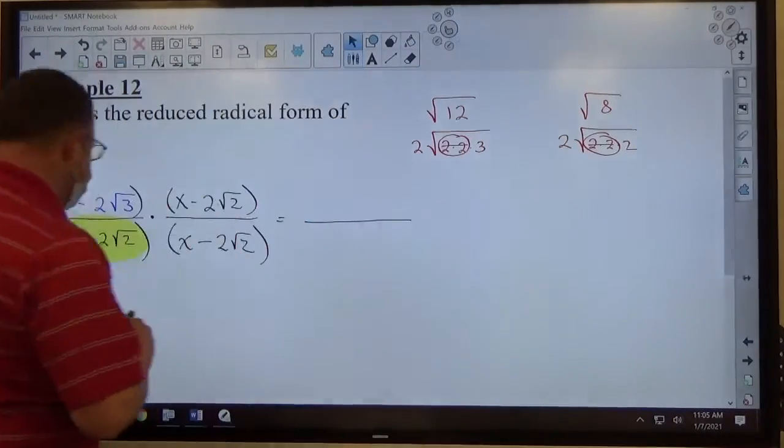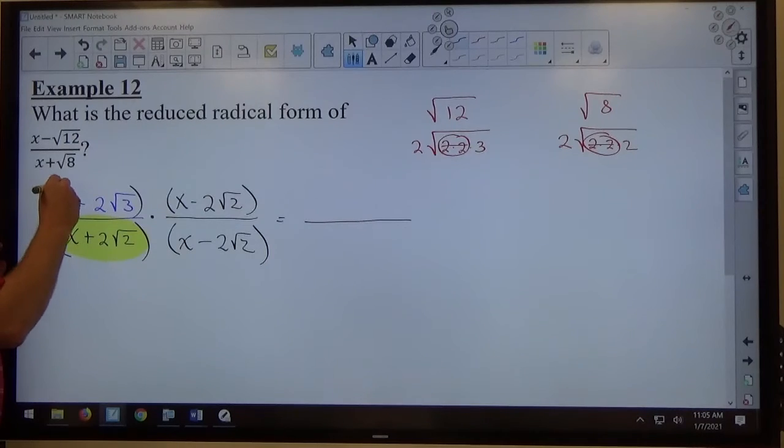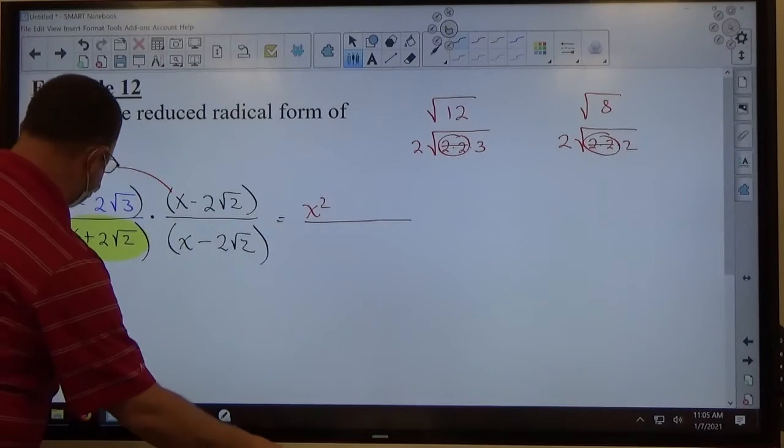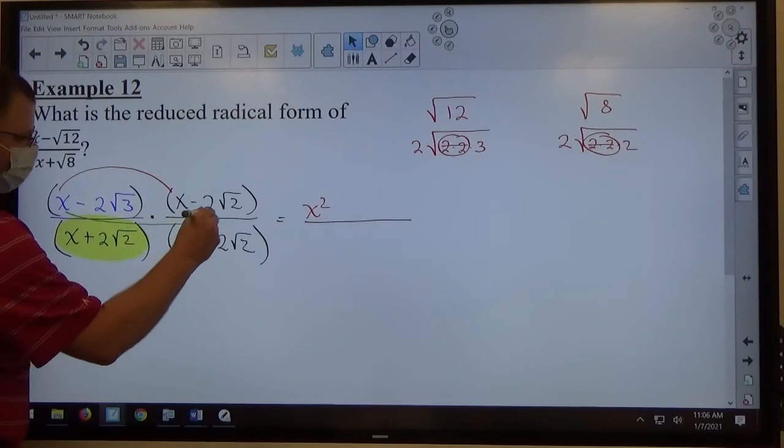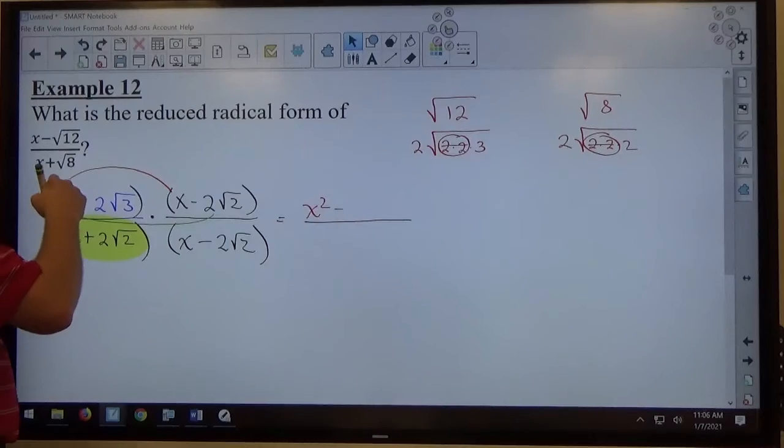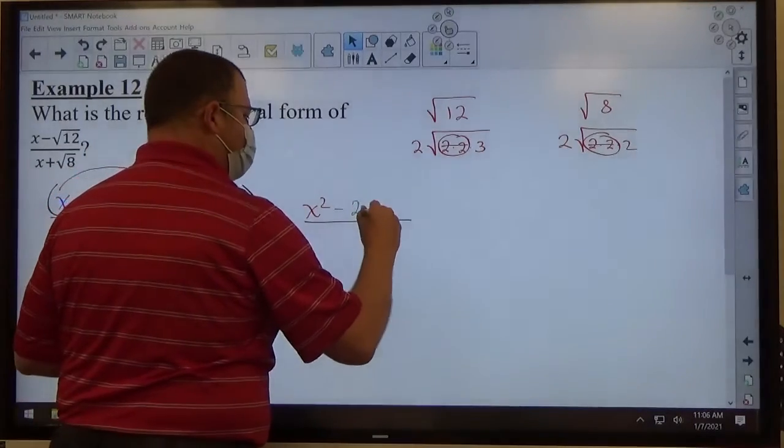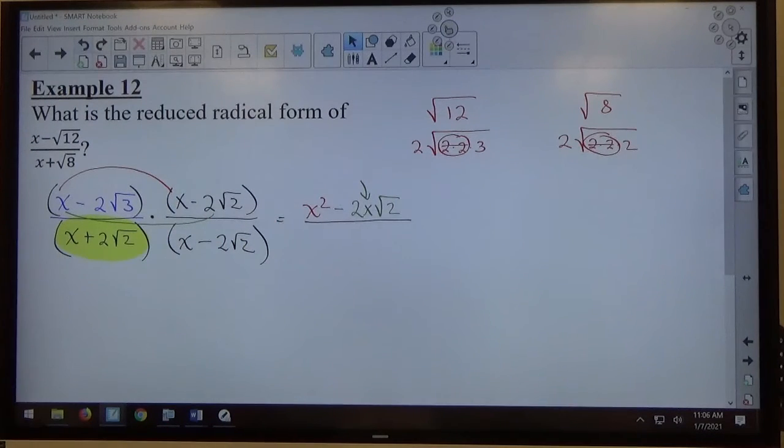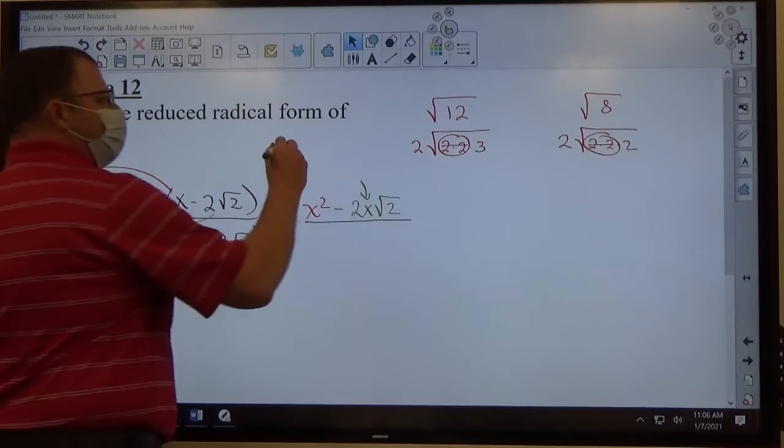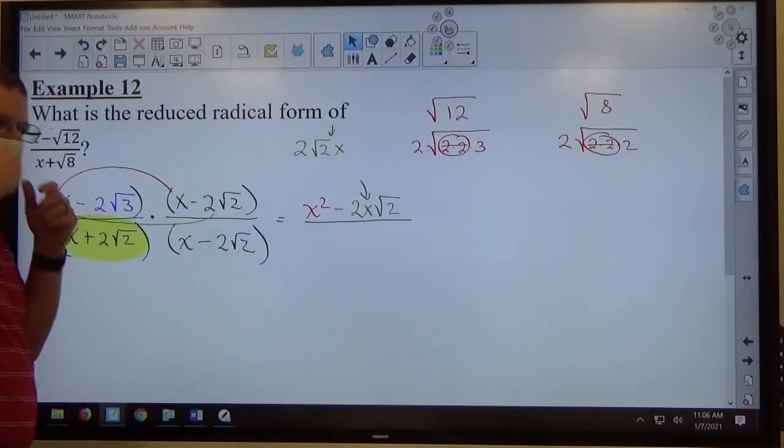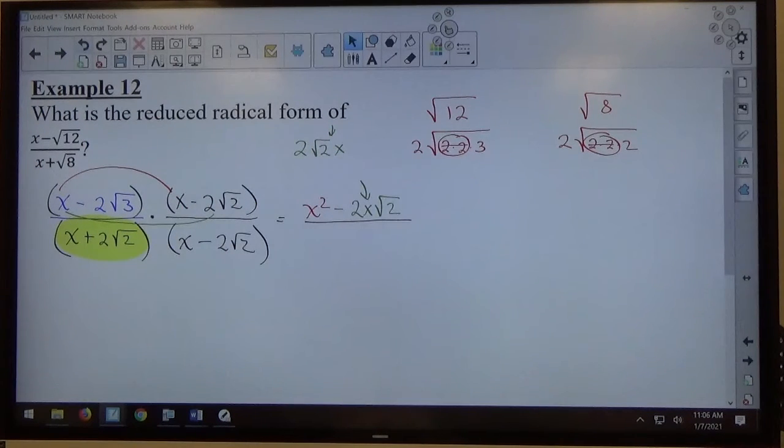So if I foil the top, I'll use different colors to show where things are coming from. First times first is x squared. They're both positive, so you get a positive product. Outside term times outside term is positive times negative makes a negative. 2 times the square root of 2 times x is 2x times the square root of 2. I usually position variables like that in front of the radical instead of after the radical. If you run it like this, that isn't wrong, but just make sure your square root stops. The x is not supposed to be underneath the square root part. But again, I usually position it in front so there's no confusion.